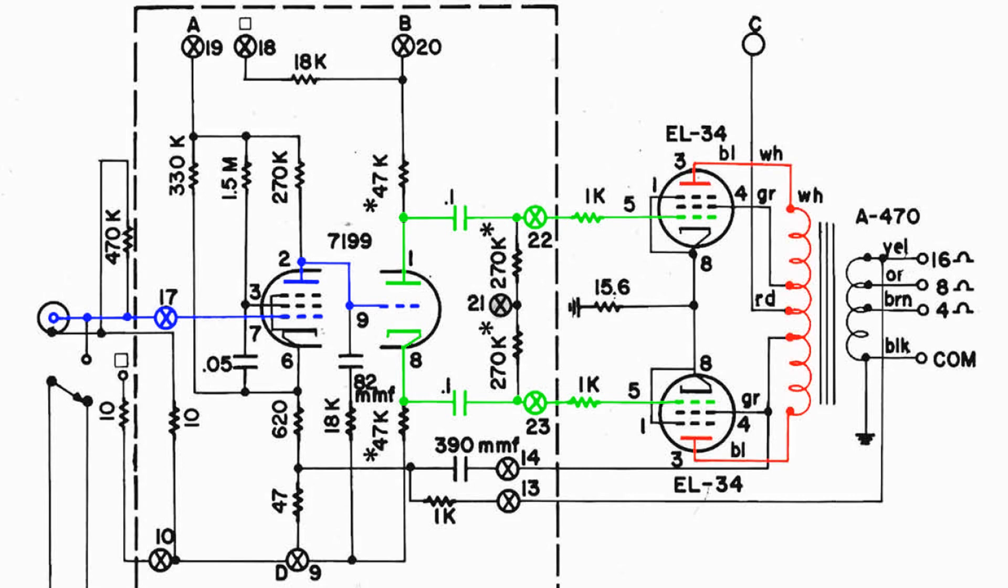Each one of those tubes amplifies in a push-pull configuration, and here is our B plus connection. Now something that I want to point out here is we've got two more connections from the primary of the audio output transformer right here that goes to the center grid. Now that connection makes the audio output more linear in its performance.